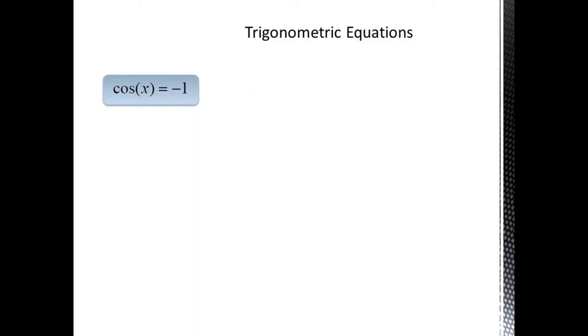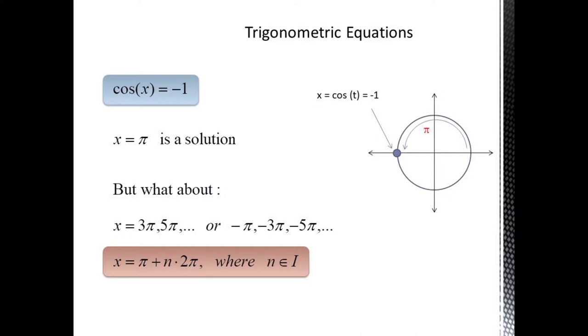Suppose we had an equation cosine x equals negative 1. Thinking of our unit circle, since cosine is equal to our x value, the only solution occurs at the point negative 1, 0, where our arc length is pi. So x equals pi is the solution. But if we kept going around the circle, we could also have 3 pi, 5 pi, or going in the opposite direction,